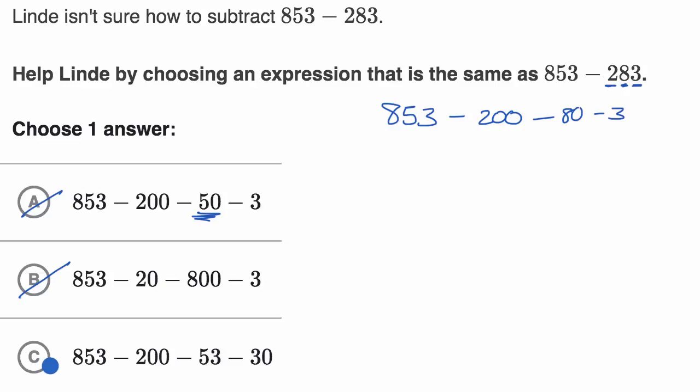Now it's probably going to be this one, but let's just make sure we feel comfortable with this. This one has 853 minus 200 minus 53 minus 30. Does that make sense? Well, let's think about it.